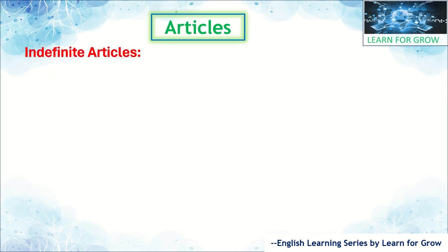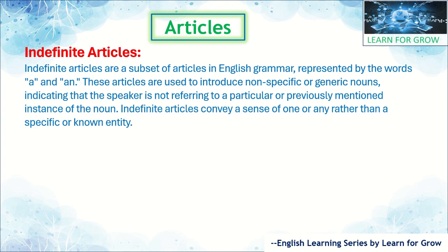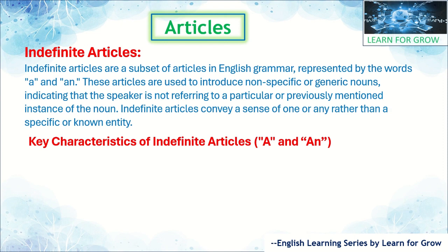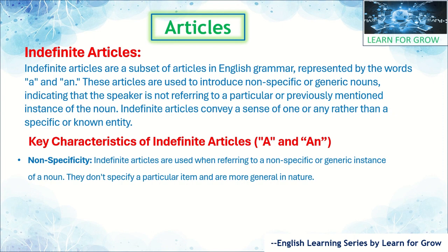Now let's look at indefinite articles. Indefinite articles are a subset of articles in English grammar, represented by the words 'a' and 'an.' These articles are used to introduce non-specific or generic nouns, indicating that the speaker is not referring to a particular or previously mentioned instance of the noun. Indefinite articles convey a sense of 'one' or 'any' rather than a specific or known entity. The first key characteristic is non-specificity — indefinite articles are used when referring to a non-specific or generic instance of a noun. They don't specify a particular item but are more general in nature.